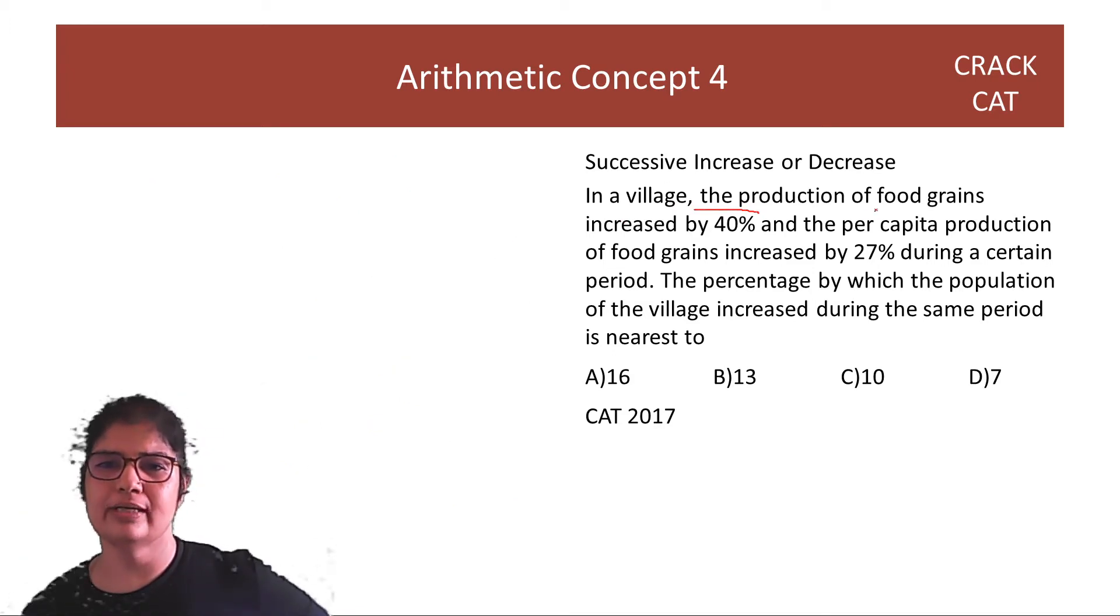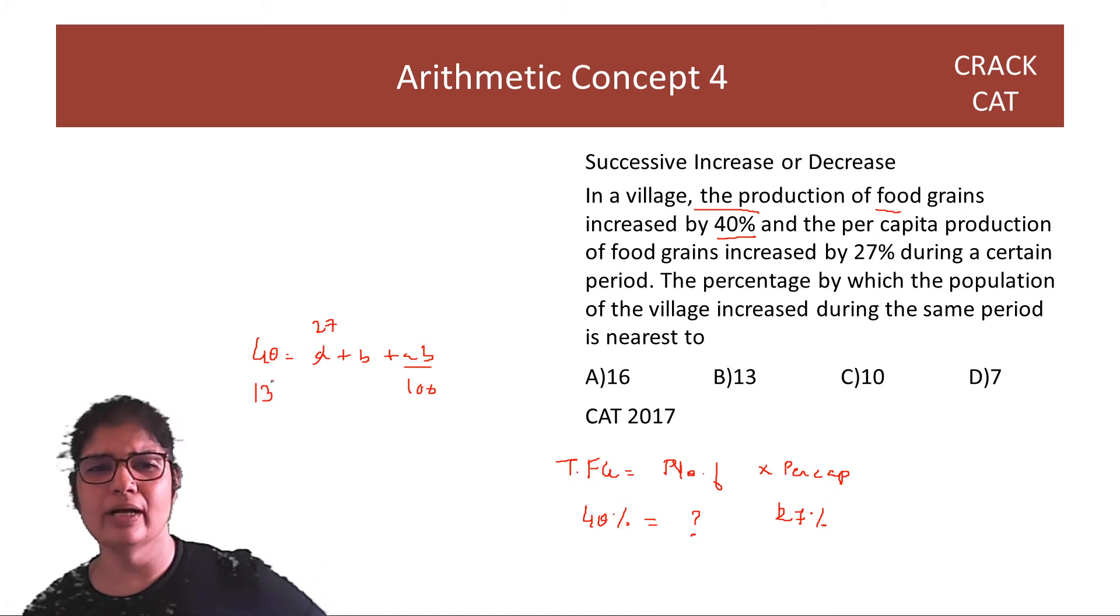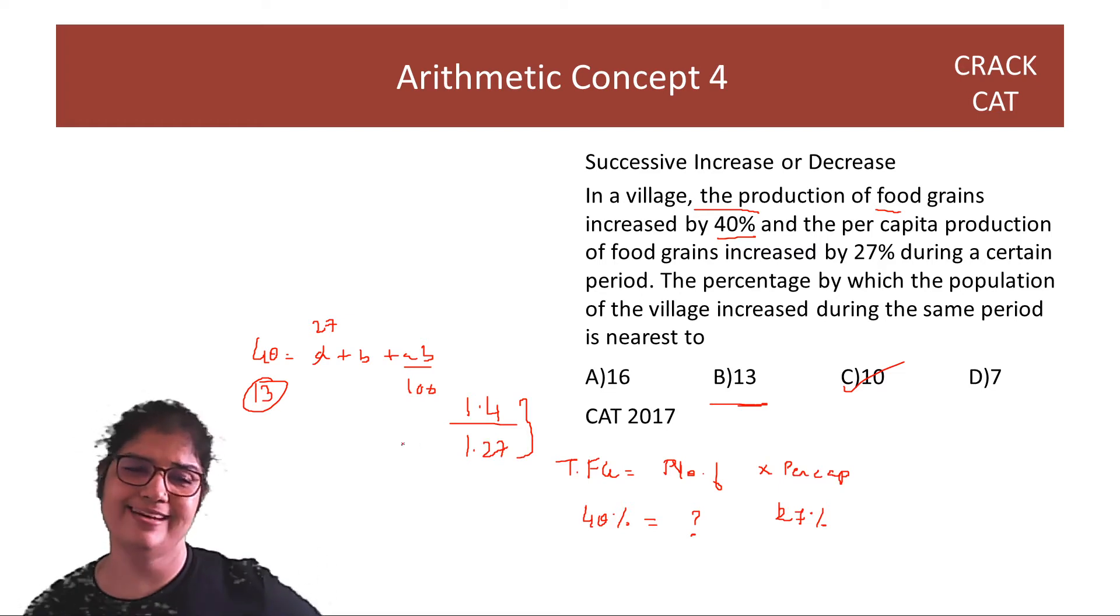Now let's do our question. In a village, the production of food grains increased by 40%. So jo food grains hai, production, I can see this as number of people kitne hai aur per capita on log kitna kha rahe. That will give me total food. So ye hai increase hua 40%. Jabke per capita increase hua hai 27%. Toh ispe kitna increase hua hai. So you say, you can say 40 is equal to a plus b plus ab by 100. Where this is 27, toh 13 se thoda kam milega aapko answer. So 10 is best. So successive increase decrease ke saath, this becomes a very quick question to do. If in fact you have to do 1.4 over 1.27, this may look a little tedious.